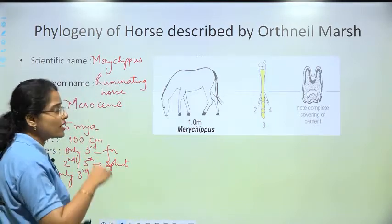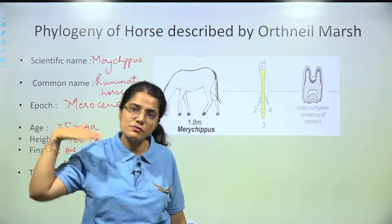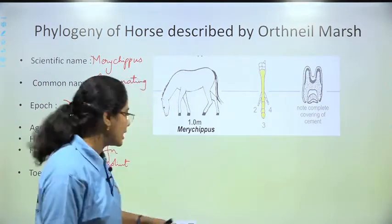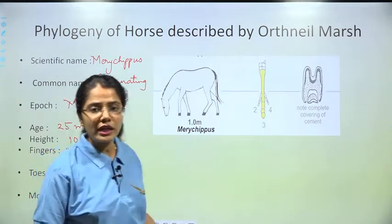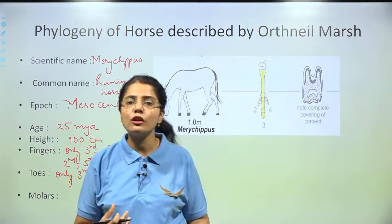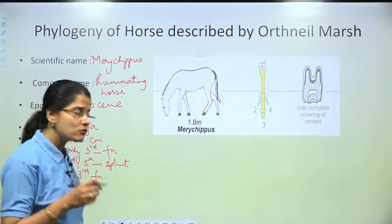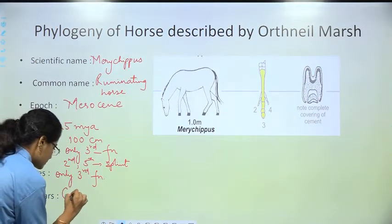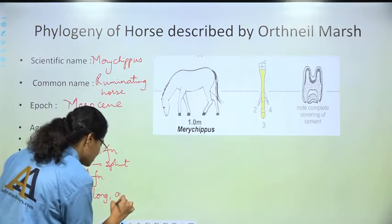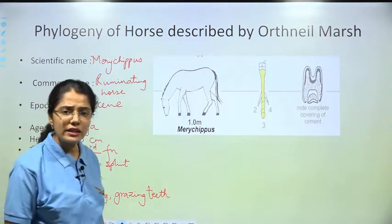Simultaneously, the height of the animal was also increasing — the modern horse is very tall. In Merihippus there is also a change in tooth structure: the crown became long and the teeth were of the grazing type — crown long and grazing teeth.